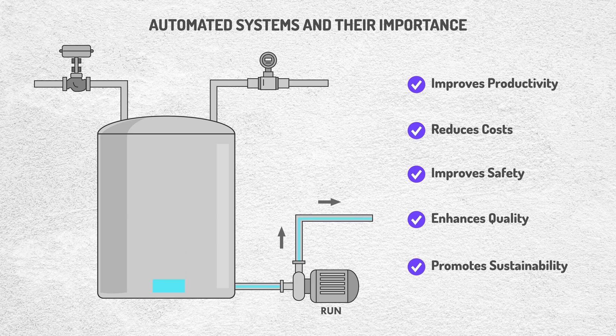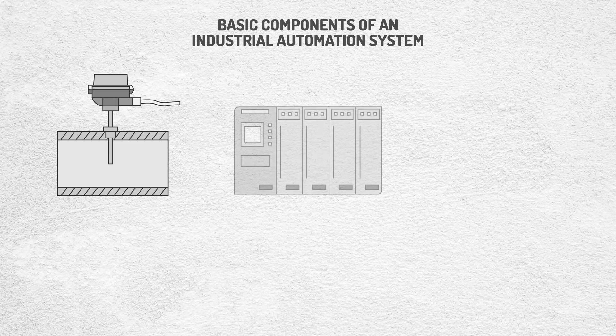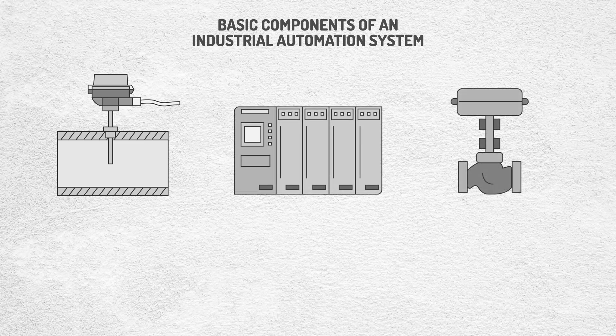Altogether, these benefits not only boost a company's profitability, but also prepare it to compete in an increasingly demanding market. Automated systems are made up of a series of components that work together to achieve efficient operation. Even though there are many elements involved, we'll focus on three key components.